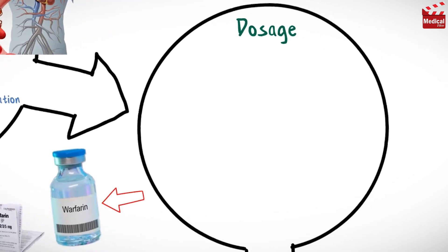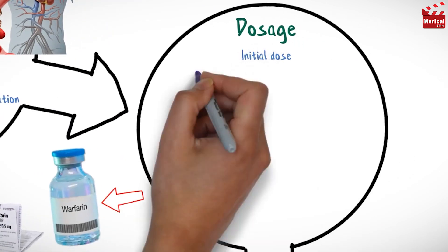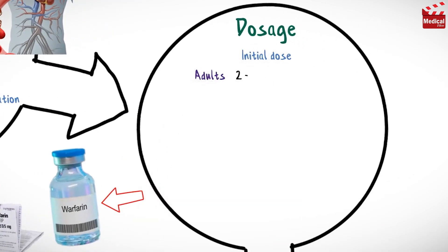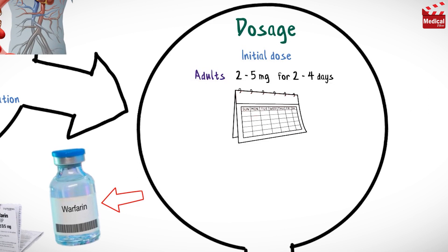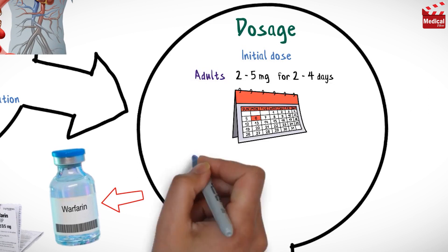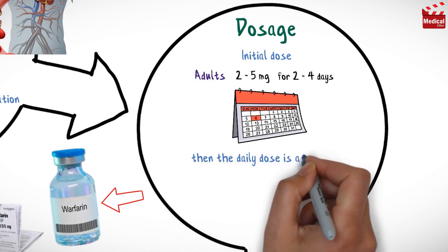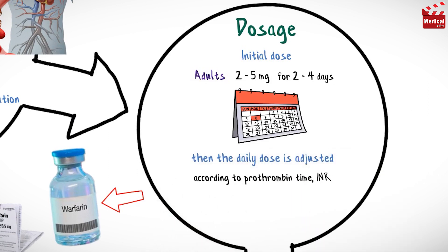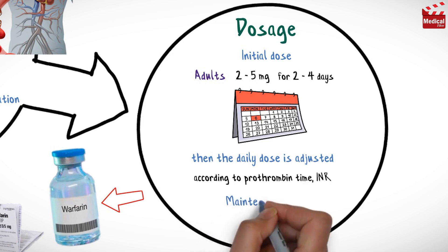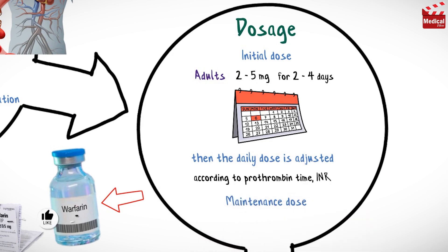The usual initial dose of warfarin for adults is 2–5 mg per day for 2–4 days, then the daily dose is adjusted according to prothrombin time or international normalization ratio. The usual maintenance dose is 2–10 mg daily.